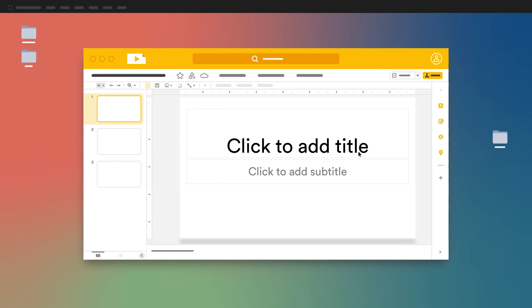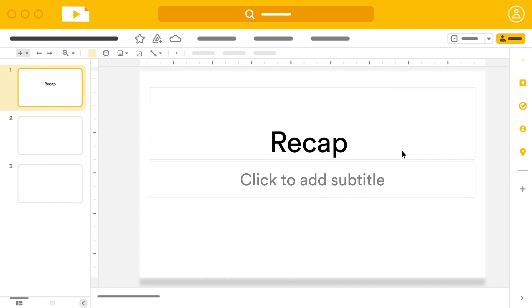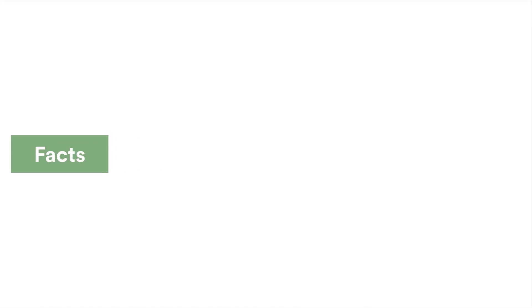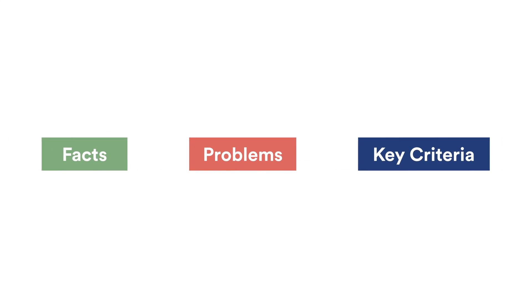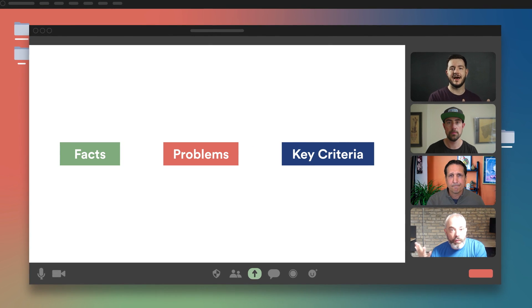The other thing you want to consider is creating a recap slide. One of the few times a slide or two can be really helpful is before you start showing the solution — put up a recap slide. Show everyone what you've learned so far and lay out what you think might be the facts, the problems, the challenges, the criteria that they've set out, and then allow the attendees to add to that or disagree with that.